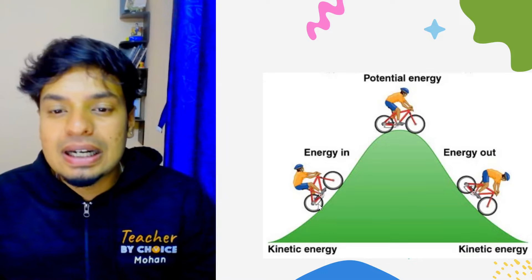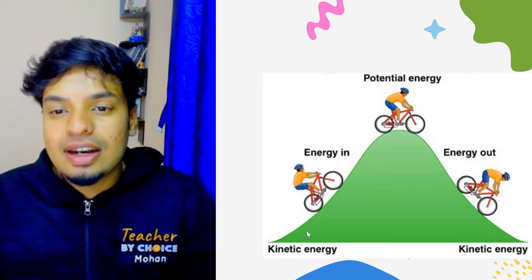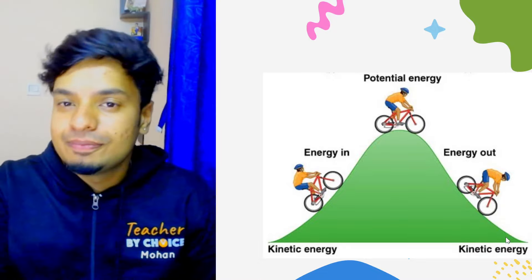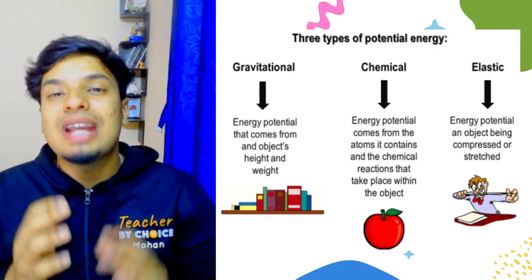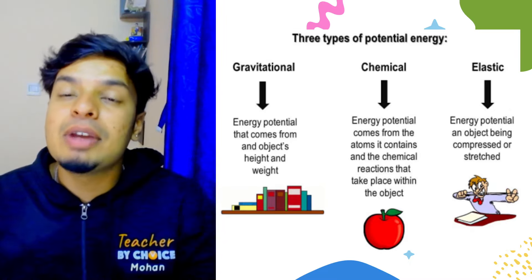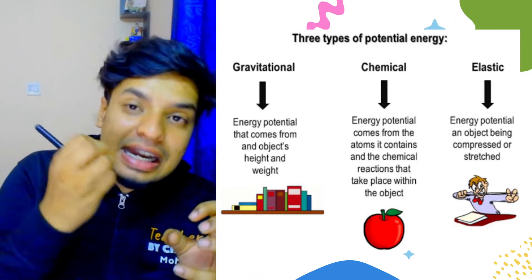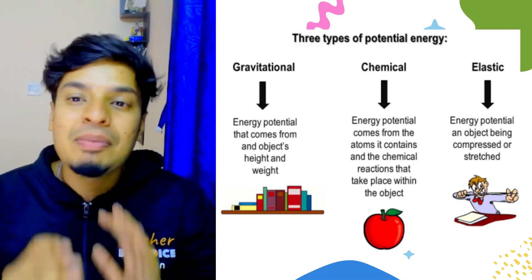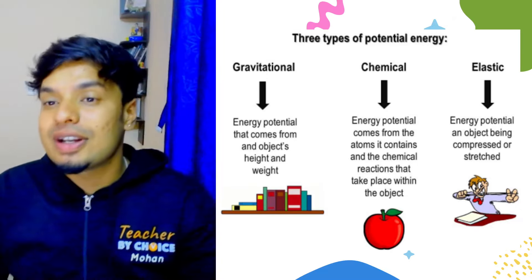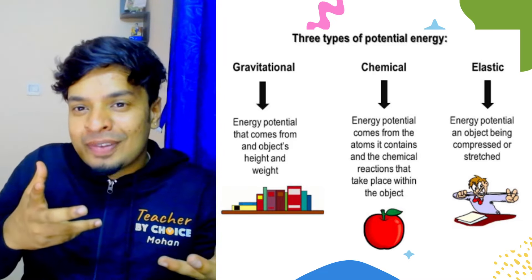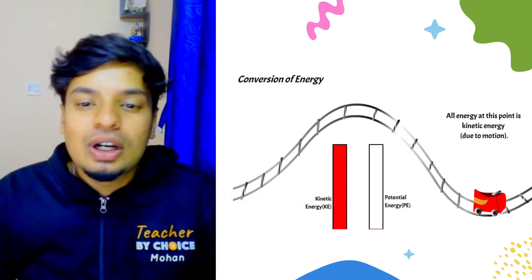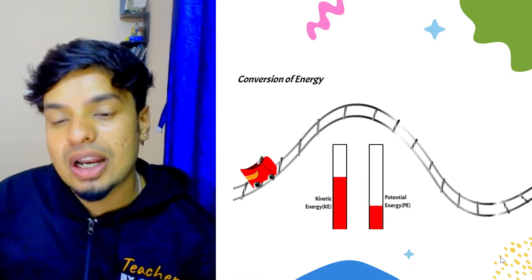A person climbing up the hill: kinetic energy becomes potential energy because of its position. Again, when he comes down, it's kinetic energy. The three types of potential energy are gravitational, chemical potential energy, and elastic potential energy. Elastic is when an object is being compressed or stretched. This can also be spring potential, where a spring is compressed—there's potential energy. If you release it, it becomes kinetic energy. Look at this: the same thing is happening here, conversion of kinetic energy into potential and potential into kinetic again.